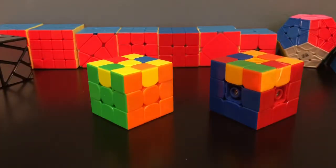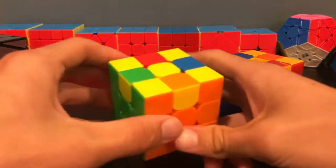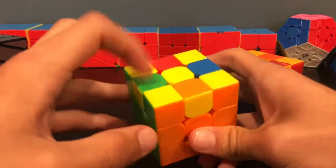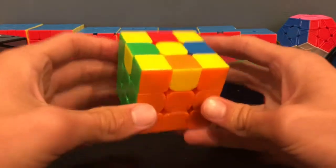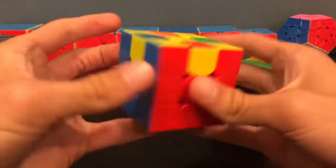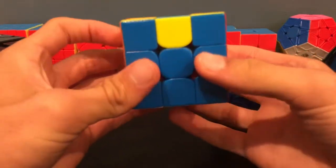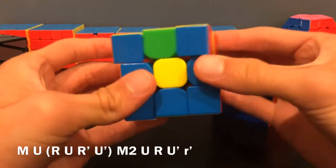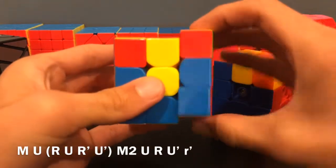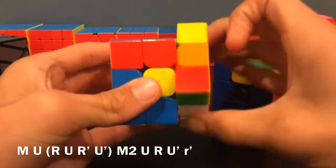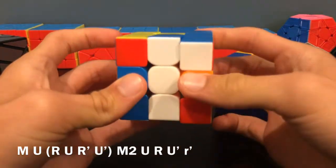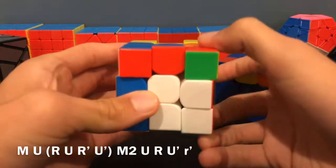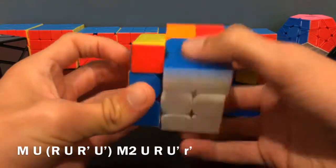These first two cases have very similar algorithms, so I'm going to show them back to back. This case is when you have all corners oriented and no edges oriented. There's only a 0.4% chance of this happening, but it's still good to be thorough. You can hold it in any way and then do this algorithm: M U R U R' U' M2 U R U' R'.